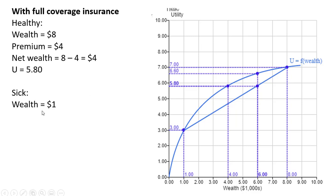If the person is sick, they have a wealth of $1, they paid a premium of $4, but they have an insurance reimbursement of $7, so their net wealth is still $4. And as we learned here, with a guaranteed wealth of $4 because of insurance, your utility is going to be 5.8.